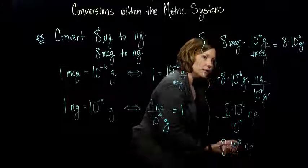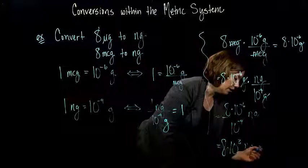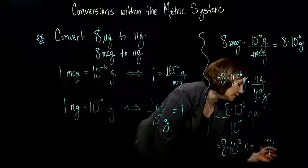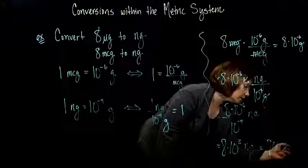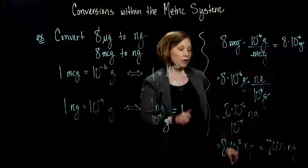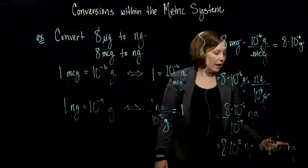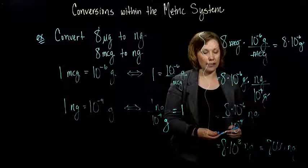And 10 to the 3rd is 1,000. So I have 8 times 1,000, which is 8,000 nanograms. So 8 micrograms is equivalent to 8,000 nanograms. And there we have it.